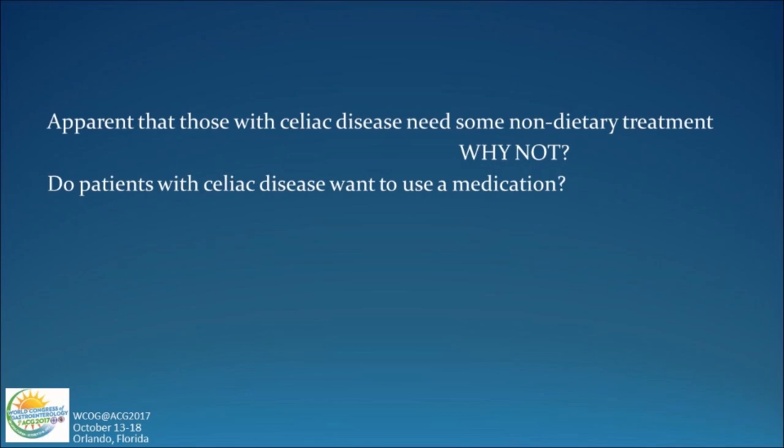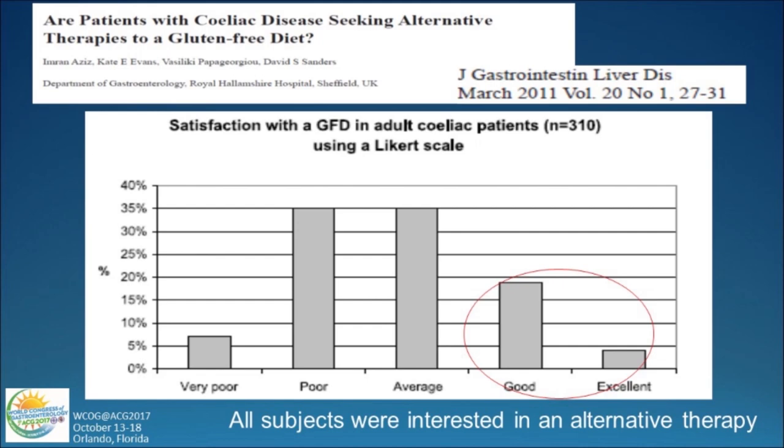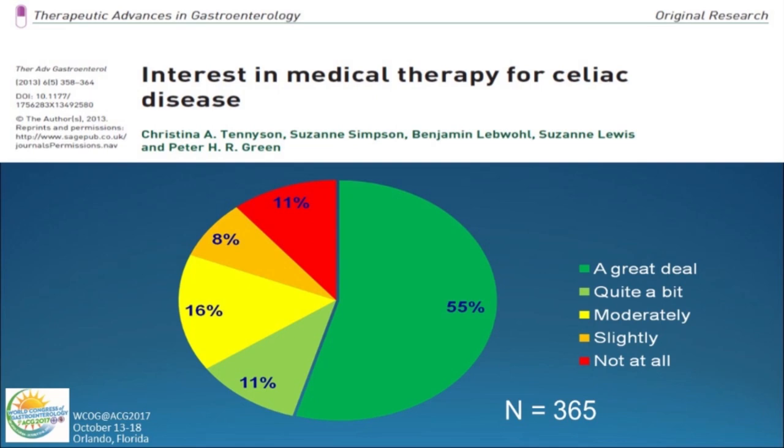Do patients with celiac disease want a medication? In a study out of Sheffield, patients were asked about their satisfaction with a gluten-free diet — only 25% had a good or excellent satisfaction. They were also asked whether they would consider an alternate therapy; all of them were interested. Looking at 350 patients, 75% were actually interested in another additional or alternate therapy a great deal, quite a bit, or moderately. So patients want a drug.